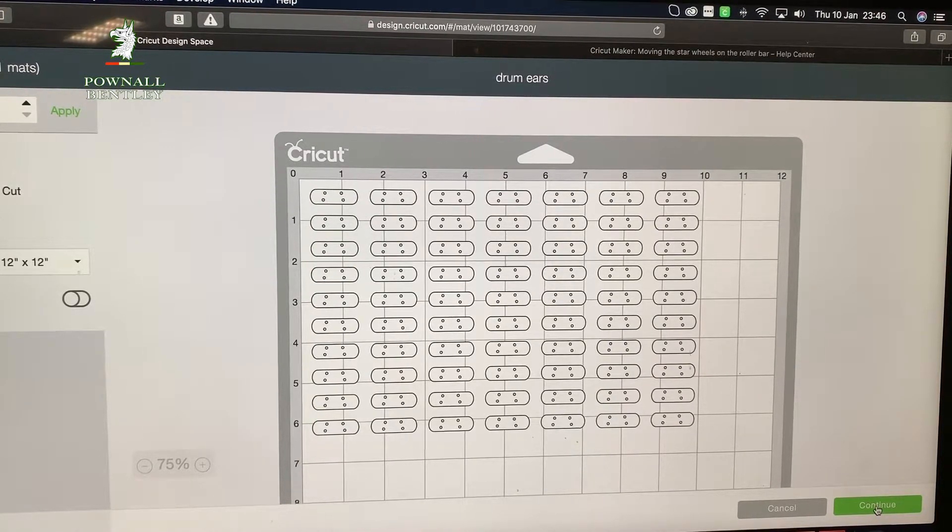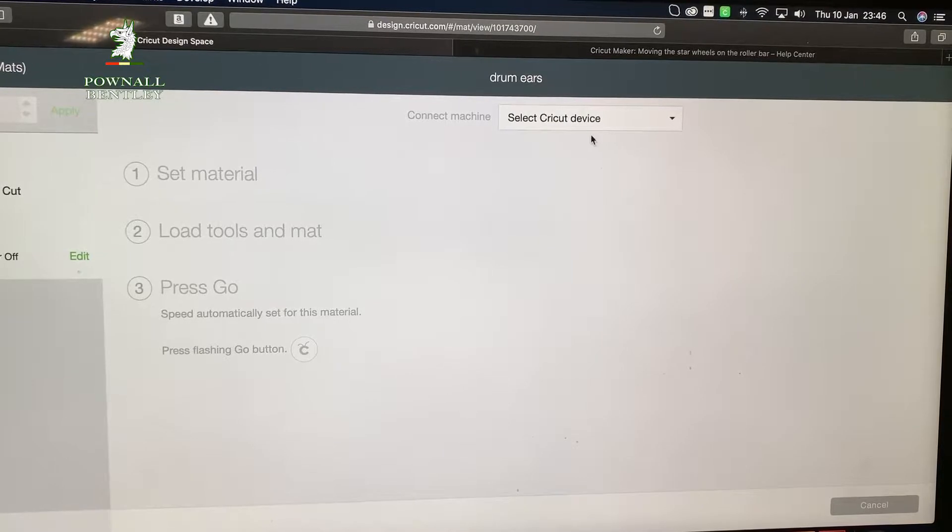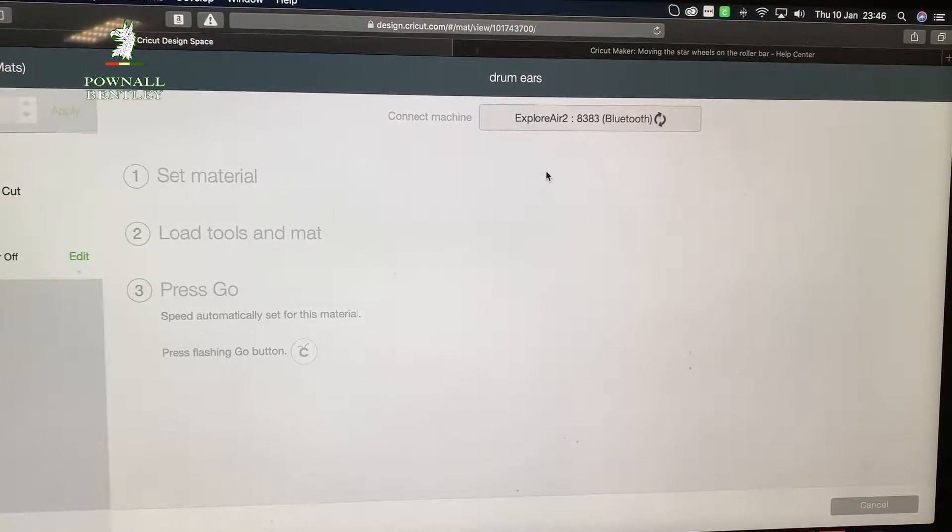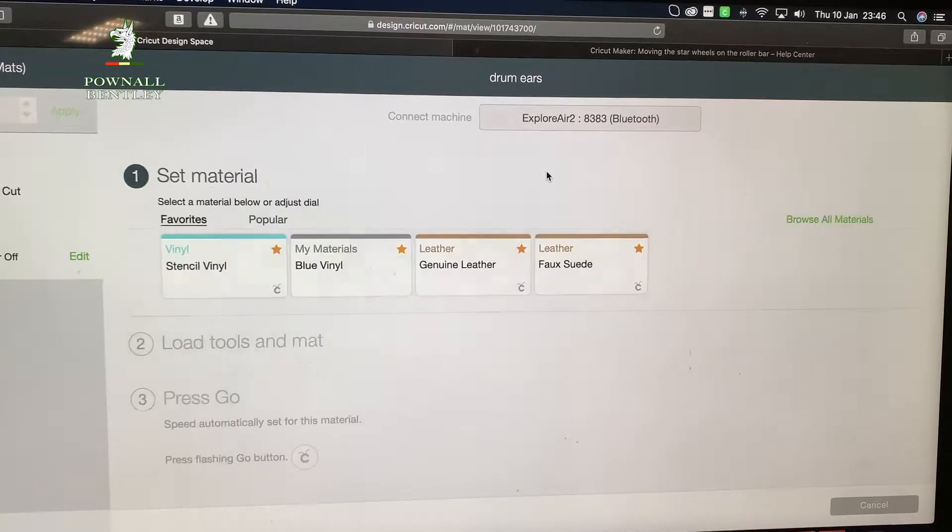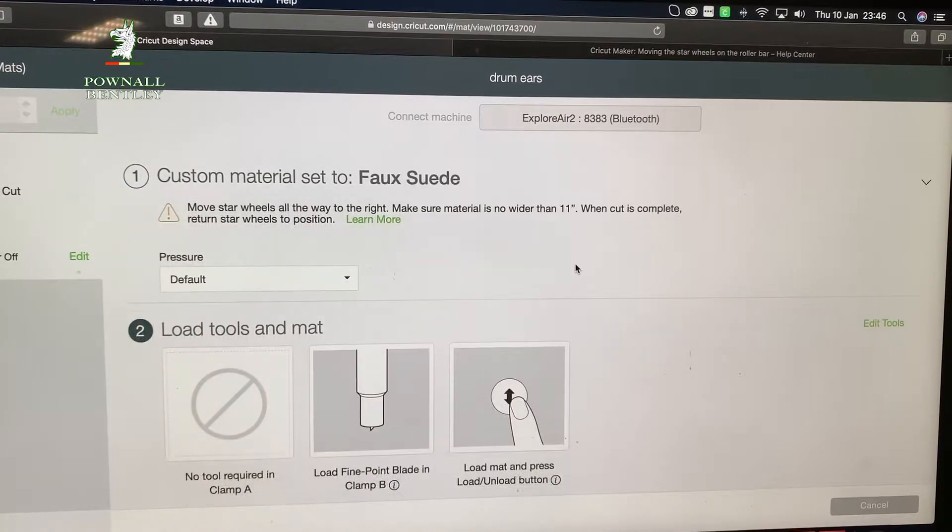12x12 mat and continue. It automatically finds my Explore Air 2. On the dial I've set it to custom and now I choose faux suede. The pressure is fine with default and it's saying to load fine pipe beta clamp B which I've got.